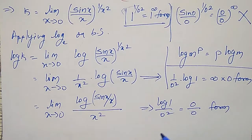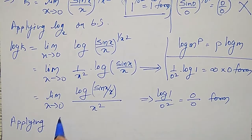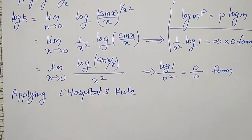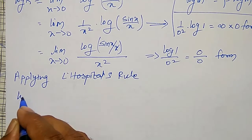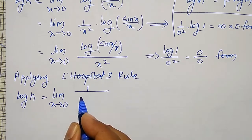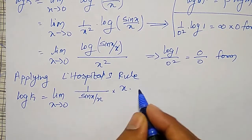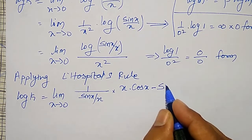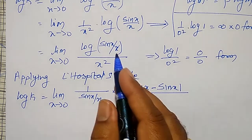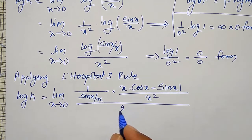After converting to 0/0 form, I can apply L'Hôpital's rule. Differentiating numerator and denominator separately: the derivative of log(sin x / x) is (1 / (sin x / x)) into [x·cos x − sin x·1] divided by x², and the derivative of x² in the denominator is 2x.